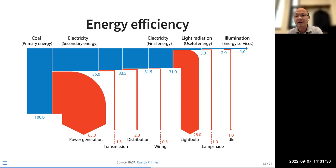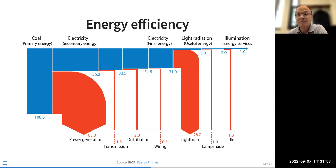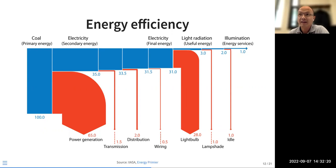90% of electricity in an incandescent bulb is wasted as heat — that's also why we increasingly use LED. The first thing I do when I move to a new place is change all lights to LED, which reduces energy use significantly. The final energy service may be just 1% of the primary energy in order to provide the illumination service.